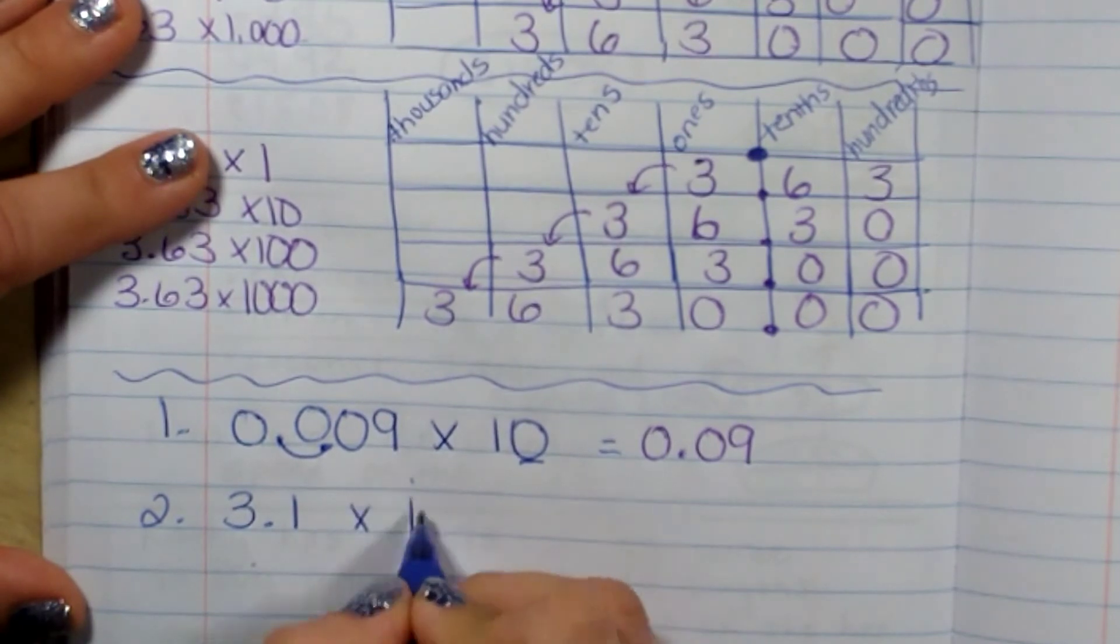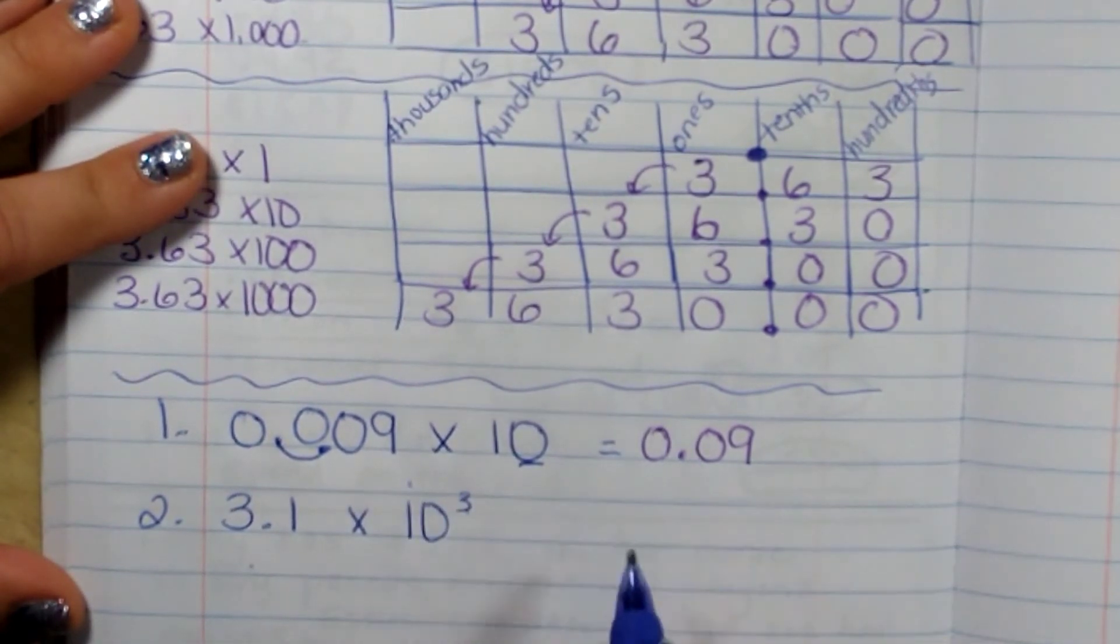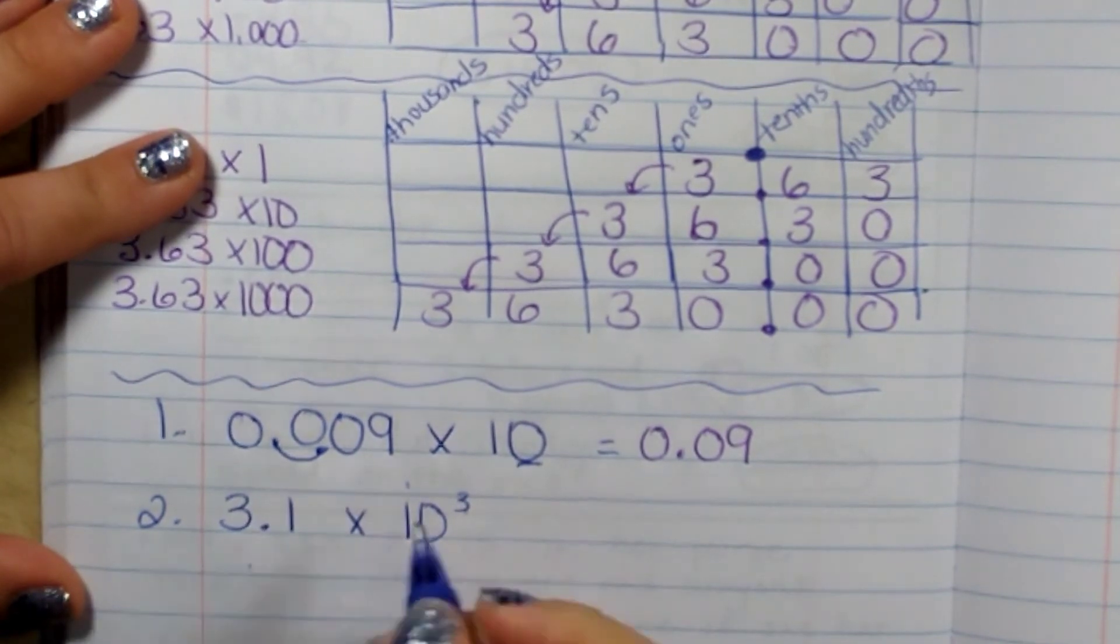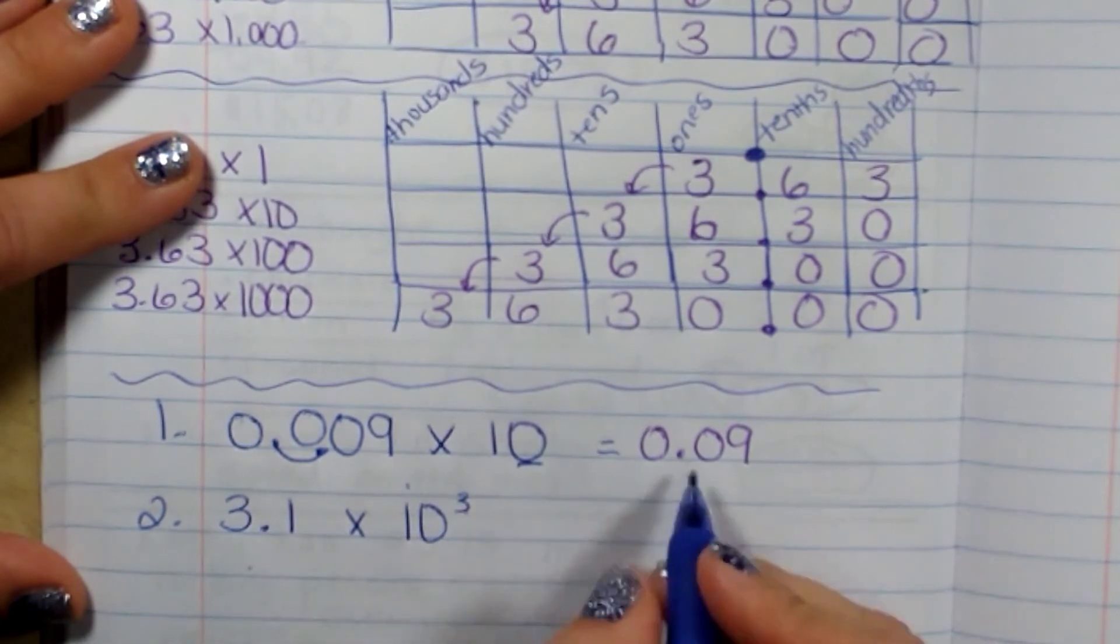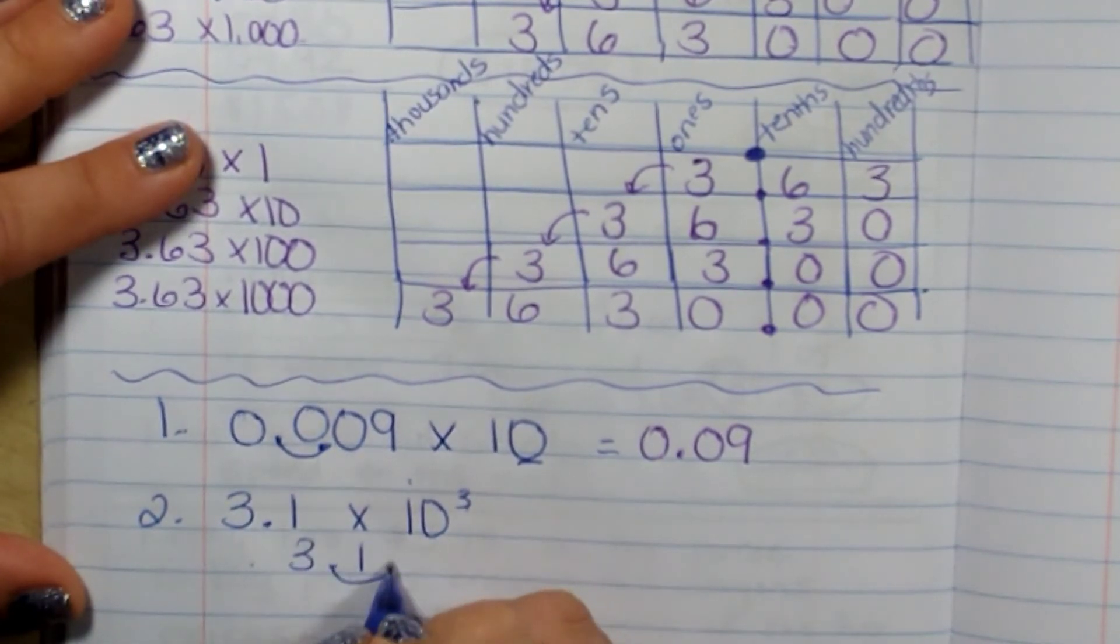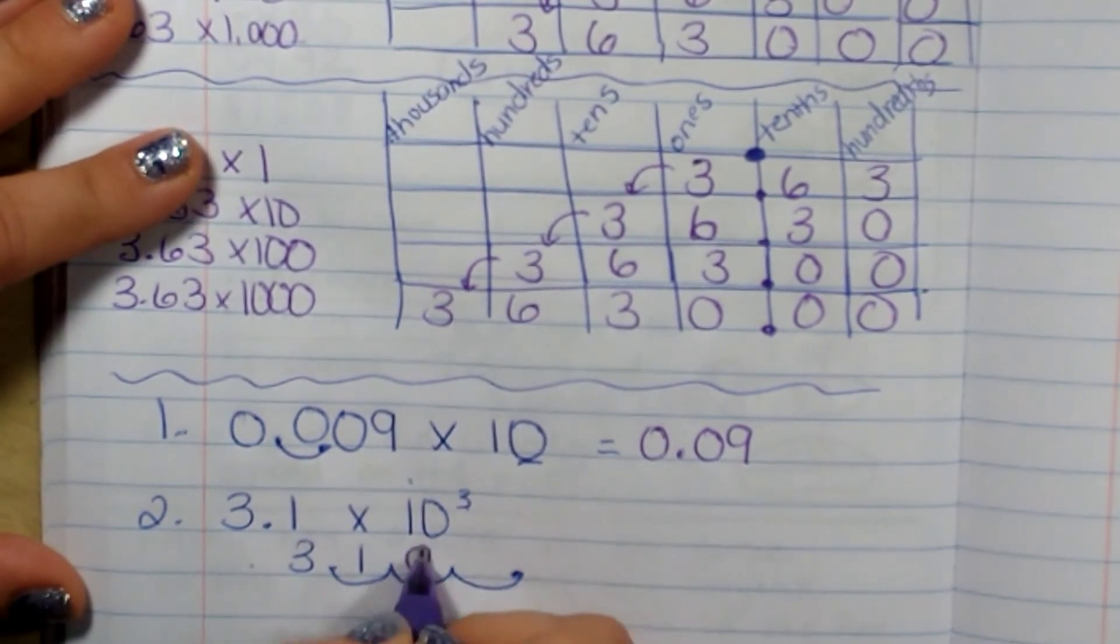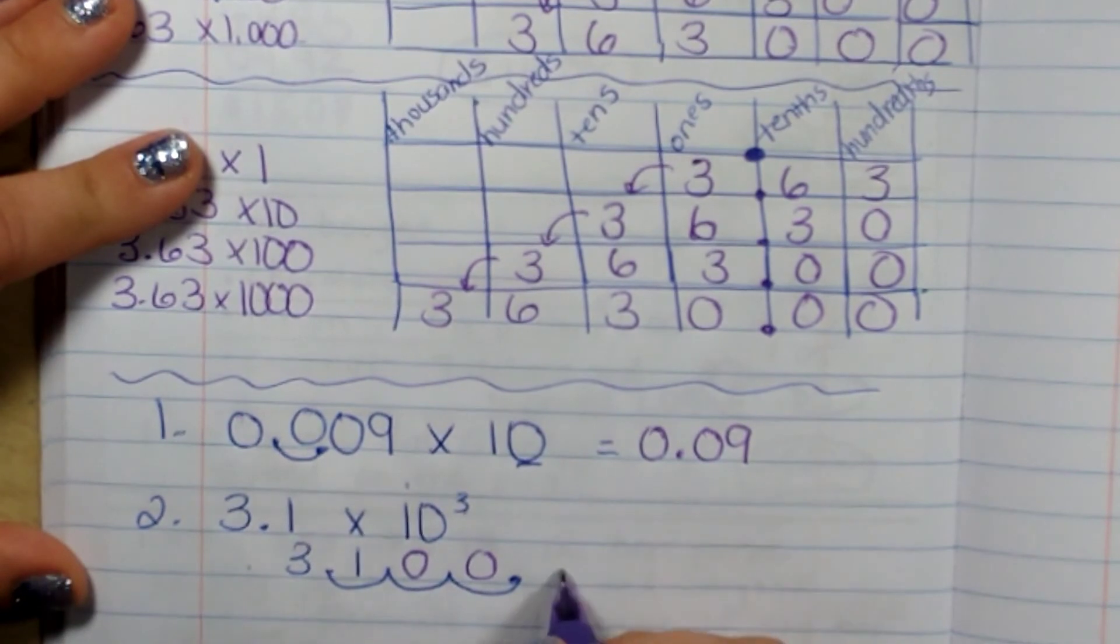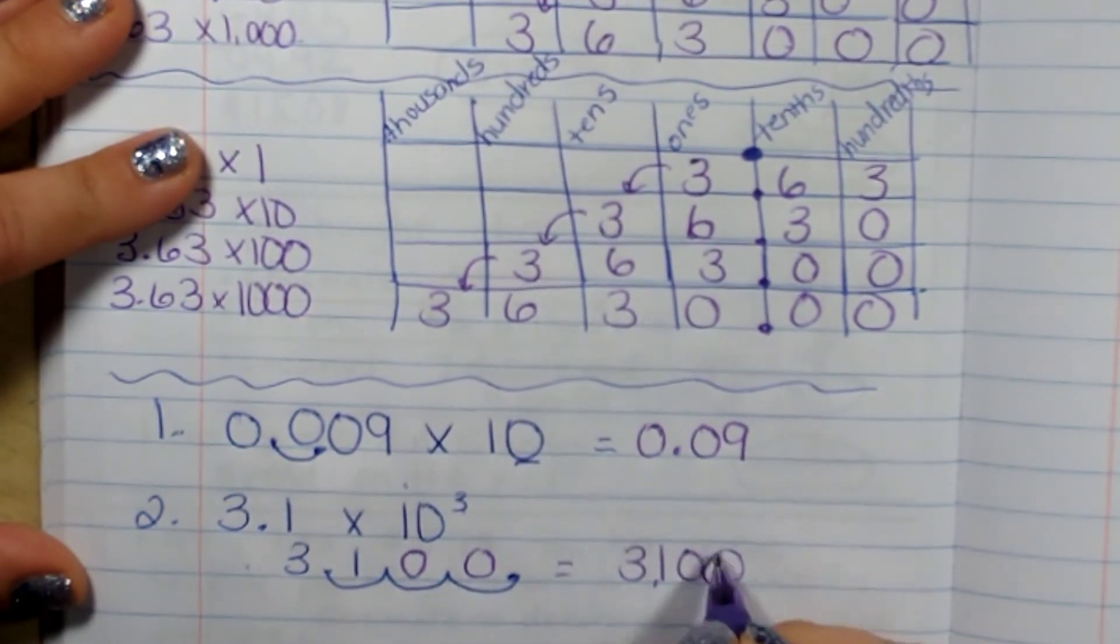Now I'm going to use ten to the third power. This would be a thousand, so I move it three decimal places to the right because that makes it larger. So it would be one, two, three. Now I have to add zeros in the holes. And now I have three thousand, one hundred.